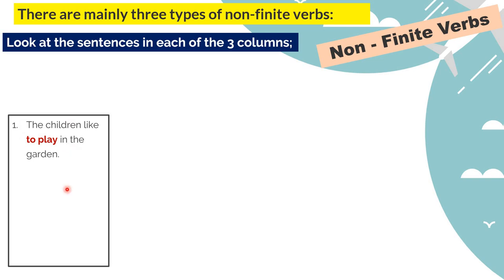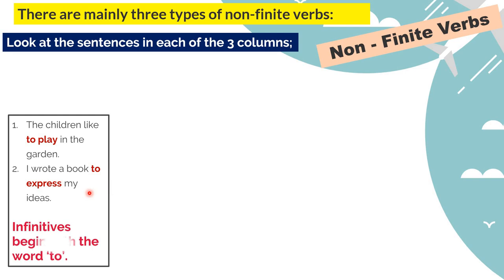The first type of non-finite verb: 'The children like to play in the garden.' 'I wrote a book to express my ideas.' Here 'I wrote' is already the main verb and 'a book' is an object - 'to express' is the non-finite. 'To play,' 'to express,' 'to read,' 'to dance' - they usually have the word 'to' with them, remain the same regardless of subject, and are not changing. These are called infinitives, and they begin with the word 'to.'